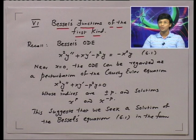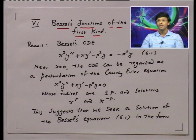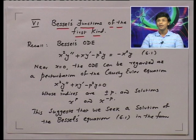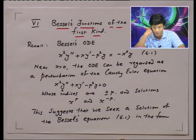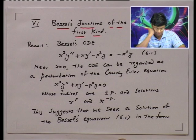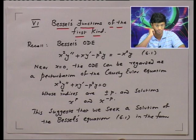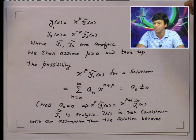How do you solve the Cauchy-Euler equation? Find the indicial equation, find the roots. The indicial equation for this is m(m−1) + m − p² = m² − p² = 0, so the solutions are x to the power p and x to the power minus p. This suggests that if Bessel's equation is a perturbation of the Cauchy-Euler equation, we should look for a solution near the origin, since the perturbation is small only when x is near zero. We should seek a solution of the form x^p · ỹ₁ and x^(−p) · ỹ₂.